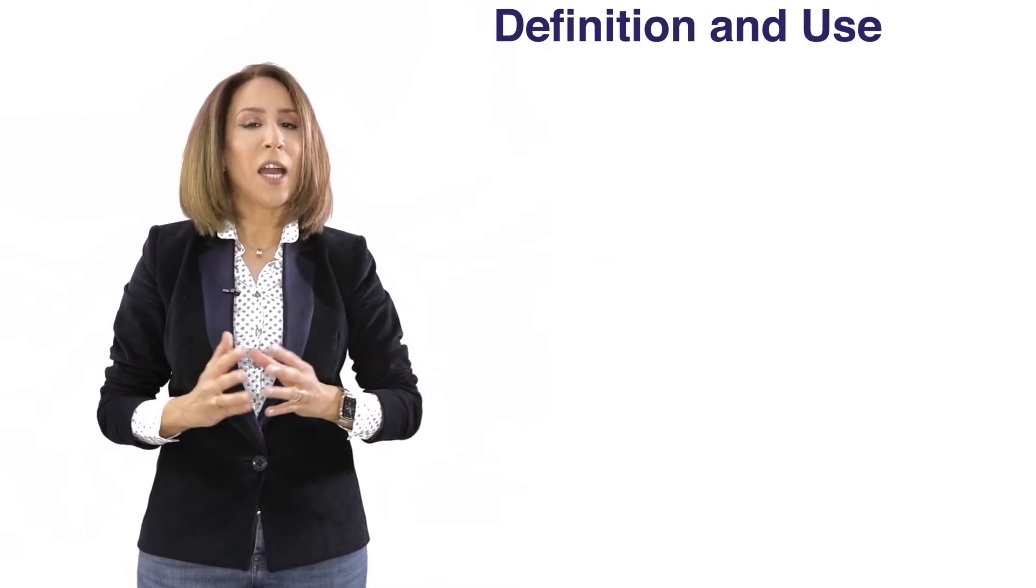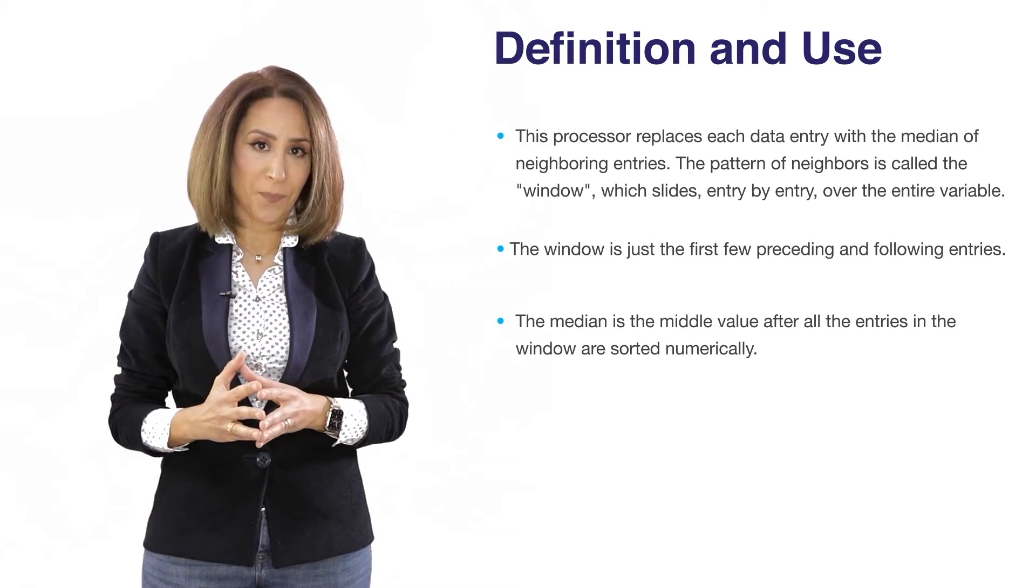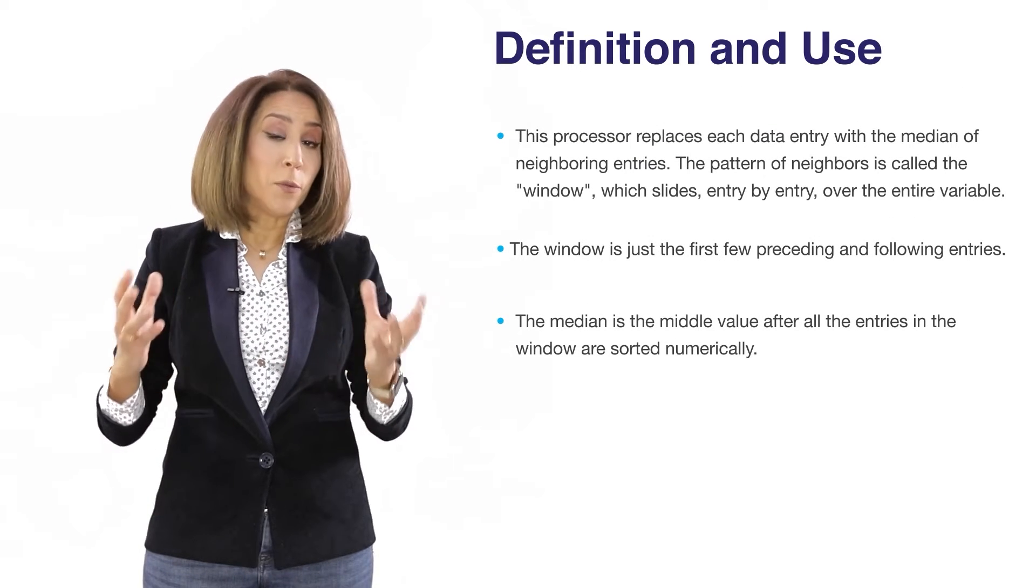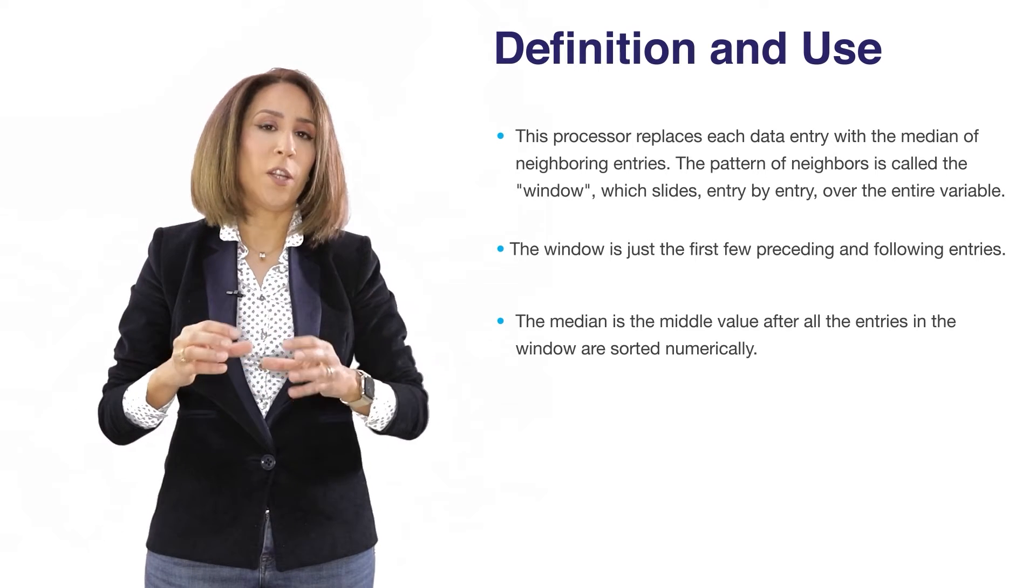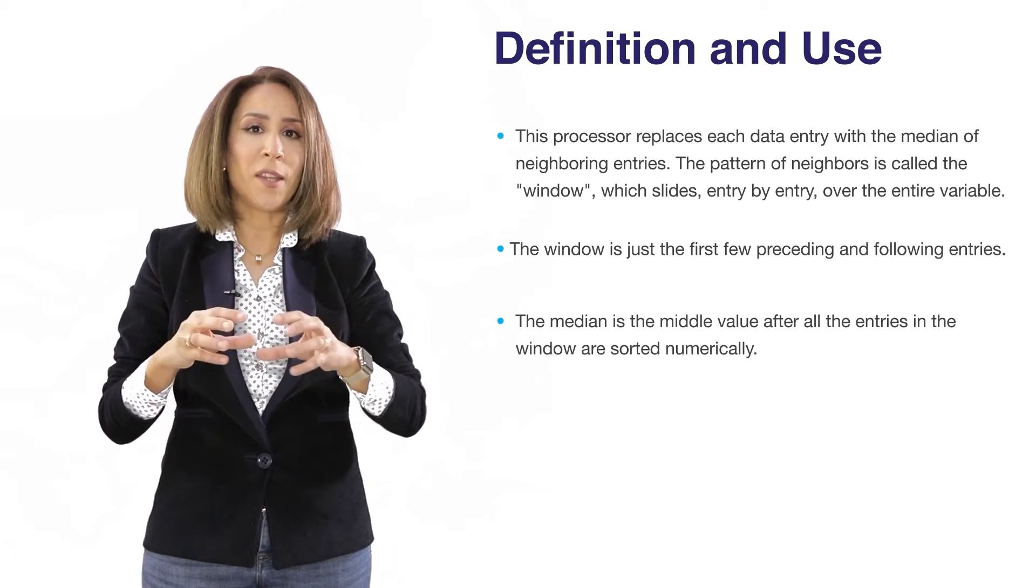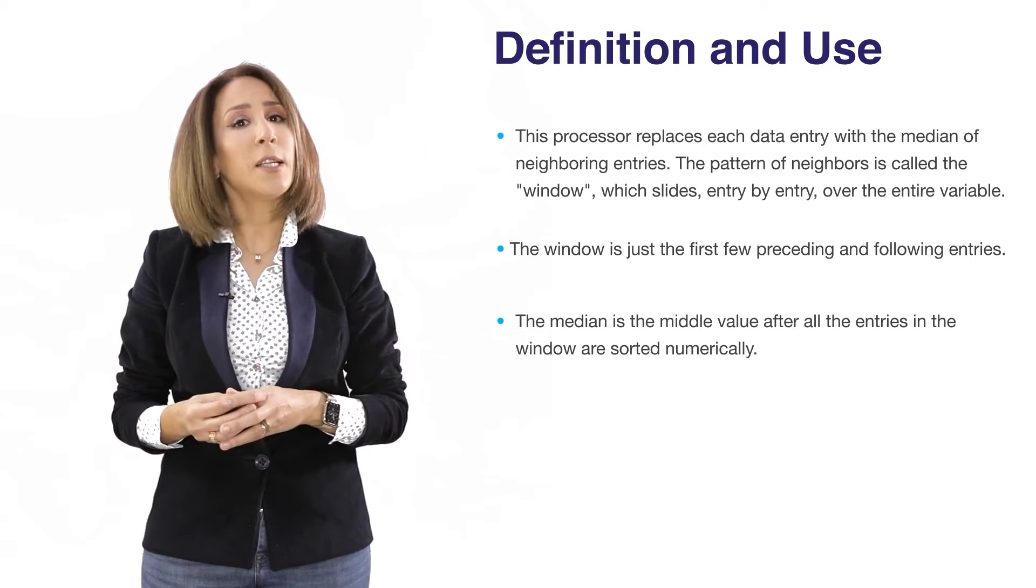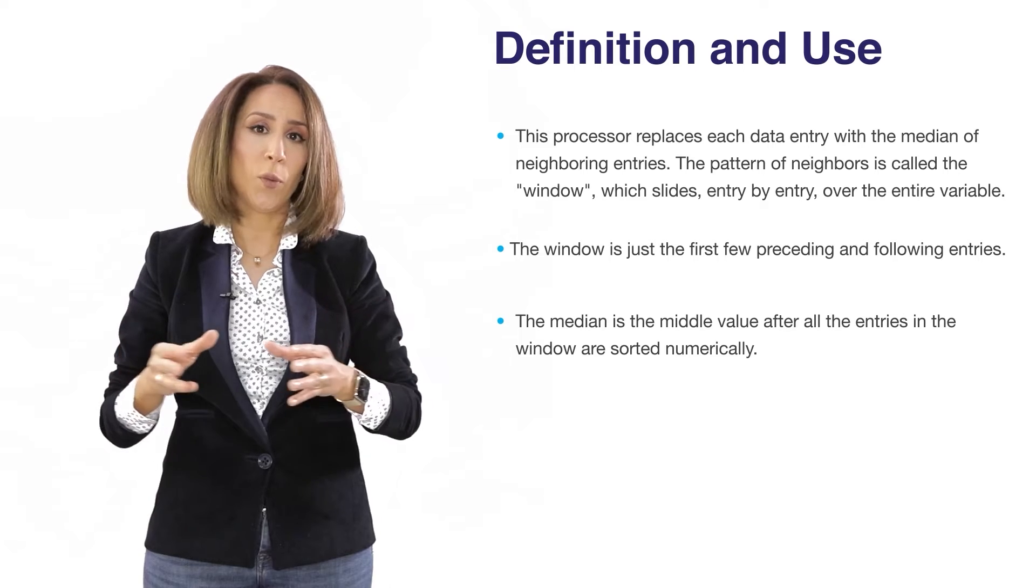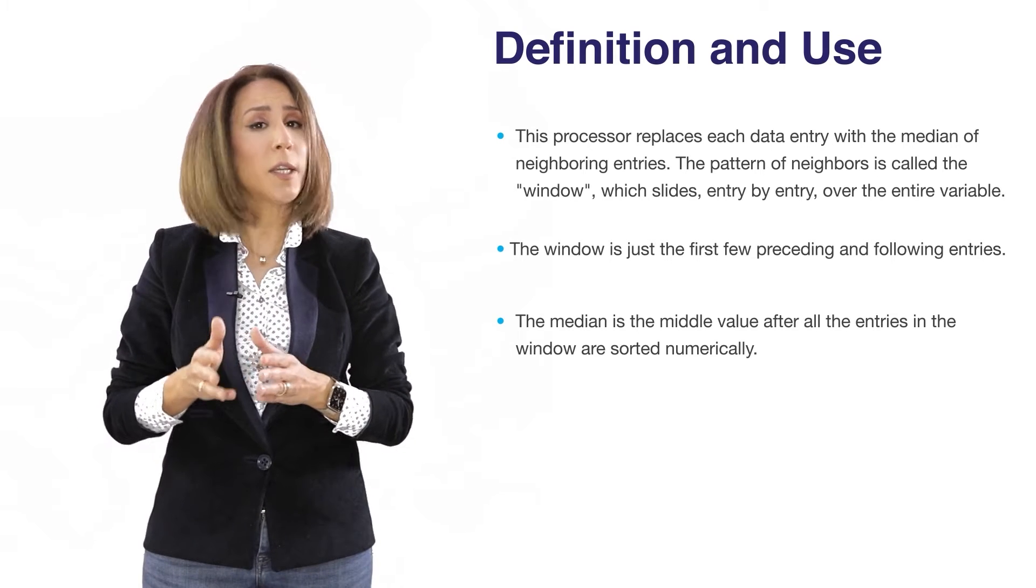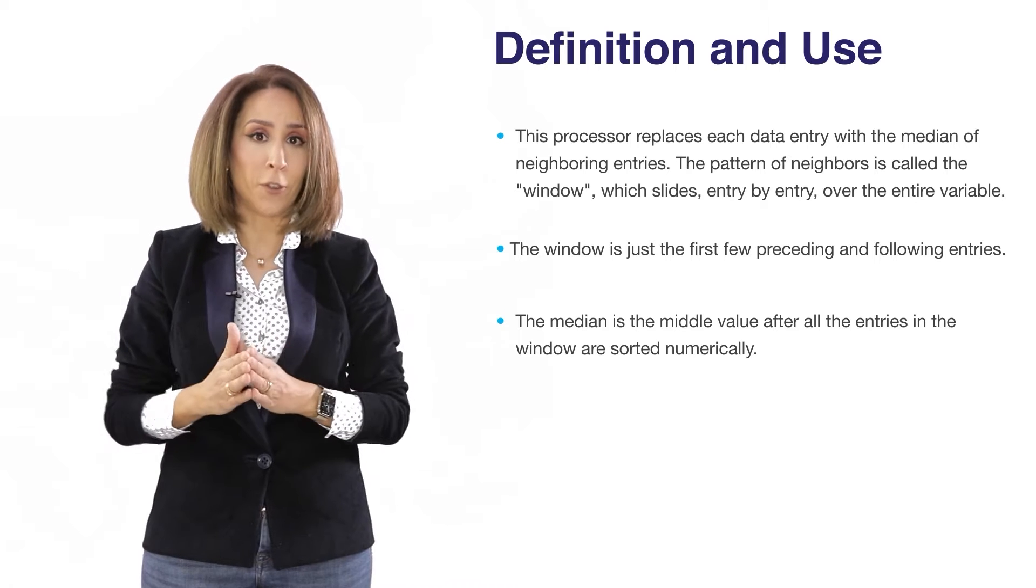Median filter, like moving average, is also used to smooth out your data. In the moving average we slide the window and take the local average within that window. In the median filter, it's the same concept but instead of taking the local average you take the median within that window. You keep sliding that window and can vary the size to obtain different variations of your median filter.